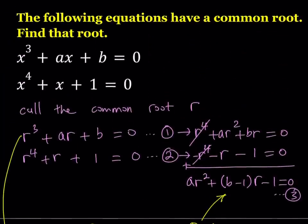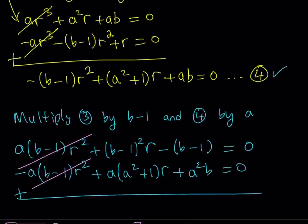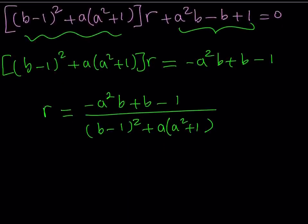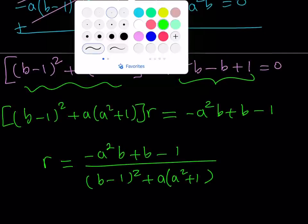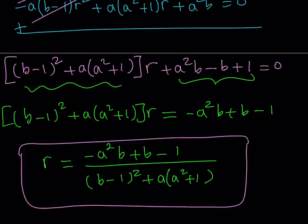Let's remember what the equations were: X cubed plus AX plus B equals zero, and X to the fourth plus X plus one equals zero. We were trying to find the common root that both of these equations share, and that is the expression we just derived. This brings us to the end of this video. I hope you enjoyed it. Thank you for watching — please comment, like, and subscribe. I'll see you tomorrow with another video. Until then, be safe, take care, and bye-bye.